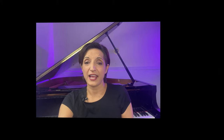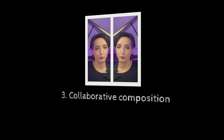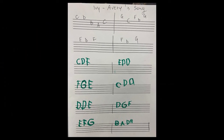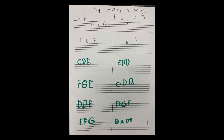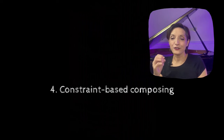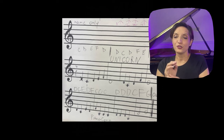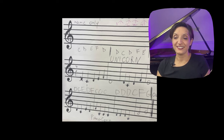Collaborative composition projects are also immensely valuable. Working in groups or with parents, siblings, and friends, students combine their diverse musical influences and ideas to create a cohesive piece. To further challenge their creativity, I introduce constraint-based composing — by limiting the use of certain pitches, specific rhythmic patterns, or harmonic progressions, students must explore innovative solutions within these boundaries, leading to unexpected musical outcomes.